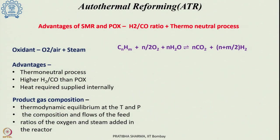Autothermal reforming is a mix of both processes - steam reforming as well as partial oxidation - and it carries the advantages of both. Like steam methane reforming, it has a higher hydrogen to carbon monoxide ratio, but SMR was endothermic, requiring large amounts of fuel to provide reaction heat. Partial oxidation was exothermic, so no external heating was required, but it had a lower H2/CO ratio.